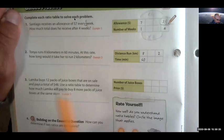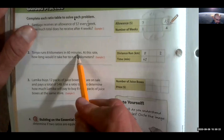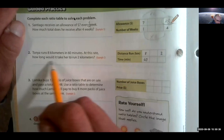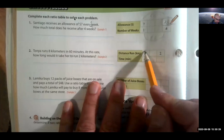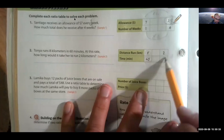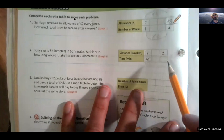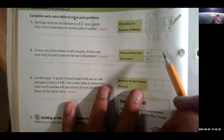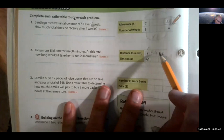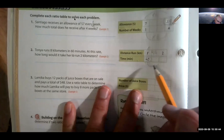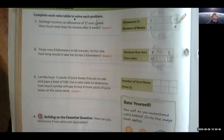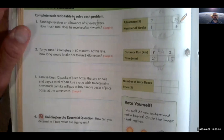All right, let's try number 2. Tanya runs 8 kilometers in 60 minutes. Oh, we did this one too. At this rate, how long would it take her to run 2 kilometers? So here we have 8 kilometers, 60 minutes. How long will it take to go 2? So what goes below here? Ready? Go. All right, so you should have figured out 8, I'll just write it in here, 8 divided by 4 equals 2, 60 divided by 4 equals 15. Easy peasy, huh?